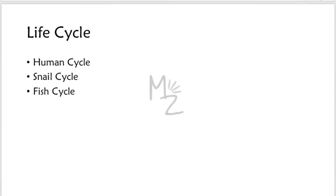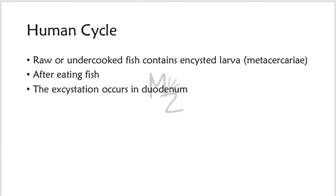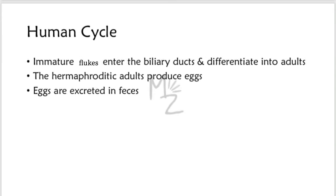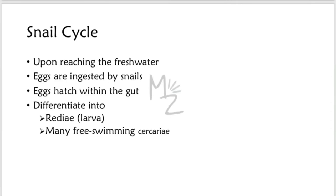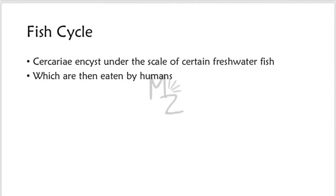The life cycle of Clonorchis has three stages: the human cycle, the snail cycle, and the fish cycle. Humans are infected by eating raw or undercooked fish containing the encysted larva — Metacercaria. After excystation in the duodenum, immature flukes enter the biliary ducts and differentiate into adults. The hermaphroditic adults produce eggs which are excreted in feces. Upon reaching freshwater, eggs are ingested by snails. Within the snail gut, they differentiate first into Redia larvae and then into many free-swimming cercariae. The cercariae encyst under the scales of certain freshwater fish — this is the fish cycle.